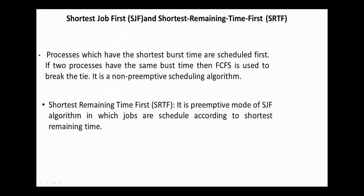In shortest job first, processes which have the shortest burst time are scheduled first. If the burst time for two processes are equal, then first-come-first-serve is used. Shortest job first is a non-preemptive scheduling algorithm.